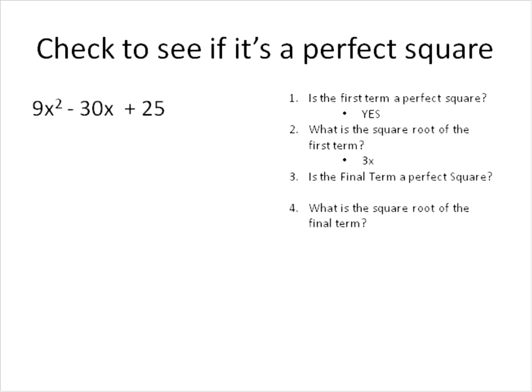The next two questions are about the final term. Is the final term a perfect square? Is 25 a perfect square? Yes it is. And what is the square root of the final term? In this case, 5 is the square root of 25. So those are the first two things you look at — is the first term a perfect square, and is the final term a perfect square?